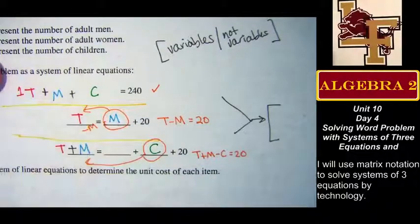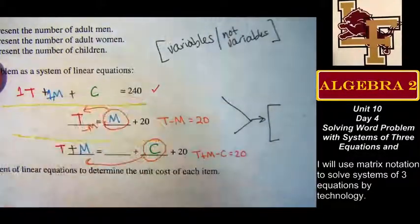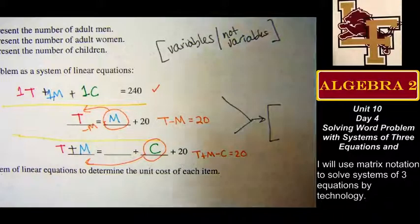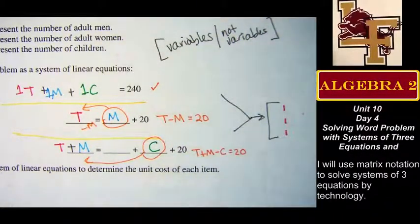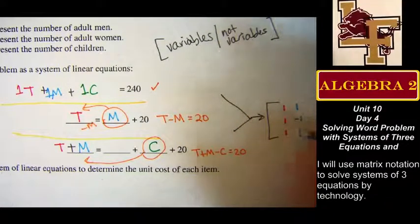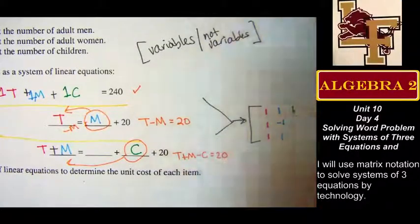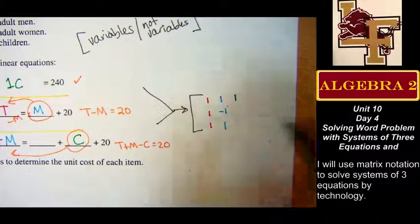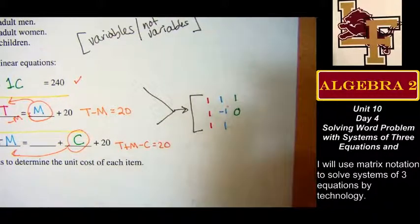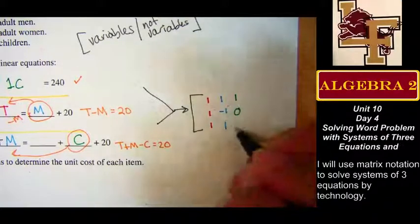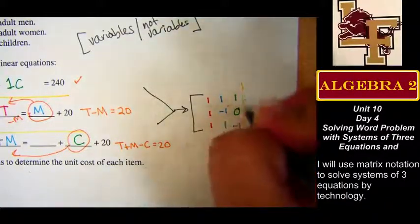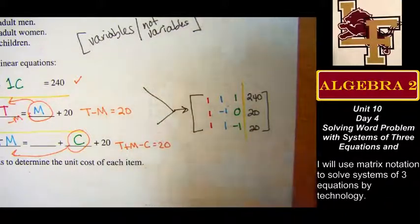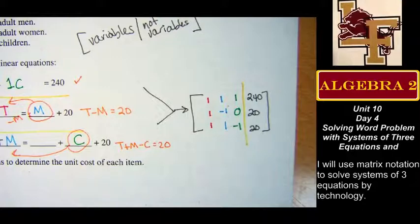None of these have coefficients, which means the numbers are all ones. So the matrix rows are: 1, 1, 1 for the first equation; 1, negative 1, 0 for the second equation — notice it has no C variable, so in the C location I put a zero because I have no information; and 1, 1, negative 1 for the third. Then add the not-variables on the right. Stick this in the calculator and you should get numbers.